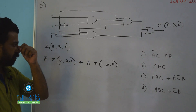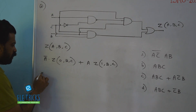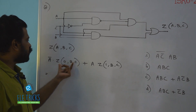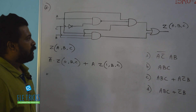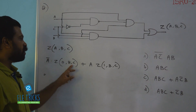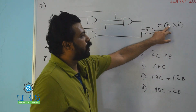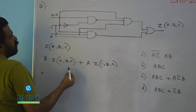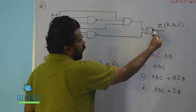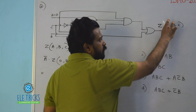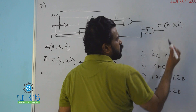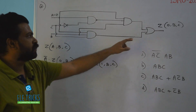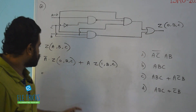Now, how does this help in reducing steps? Z(0, b, c) is the function when argument A is made equal to 0. I can set A equal to 0 in the circuit, and whatever output I calculate will be the expression for Z(0, b, c). You'll see in a short while that it's very easy to get this particular output.